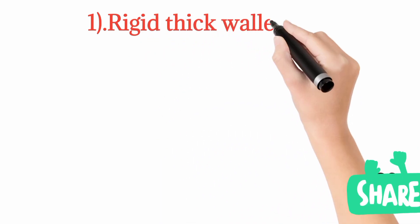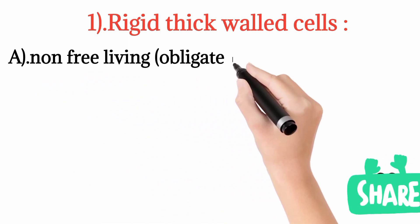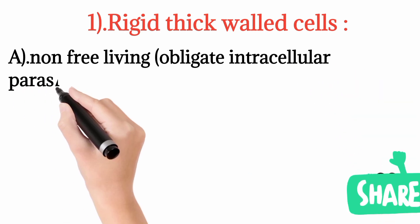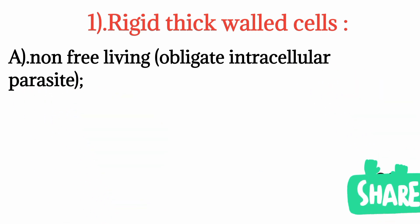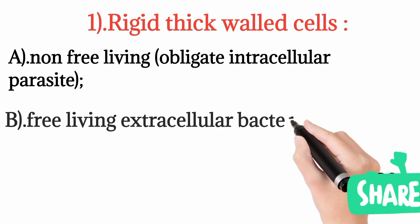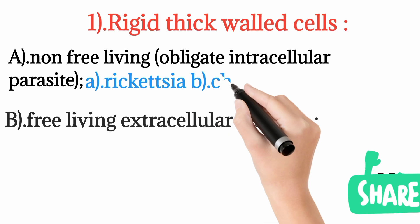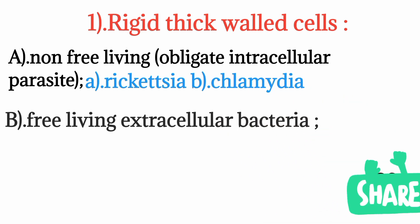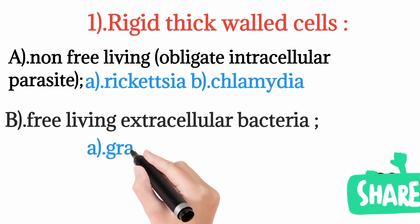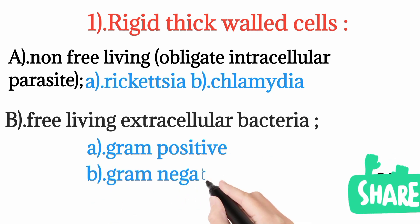Rigid thick cell wall bacteria are further classified into non-free living, meaning they require a host for growth — these are called obligate intracellular parasites, and examples include Rickettsia and Chlamydia. The second category is free-living extracellular bacteria, which can also live outside the host, and examples include gram positive, gram negative, and acid fast organisms.